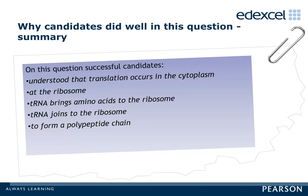Successful candidates understood that translation occurs in the cytoplasm, at the ribosome. tRNA brings amino acids to the ribosome, and tRNA joins to the ribosome to form a polypeptide chain.